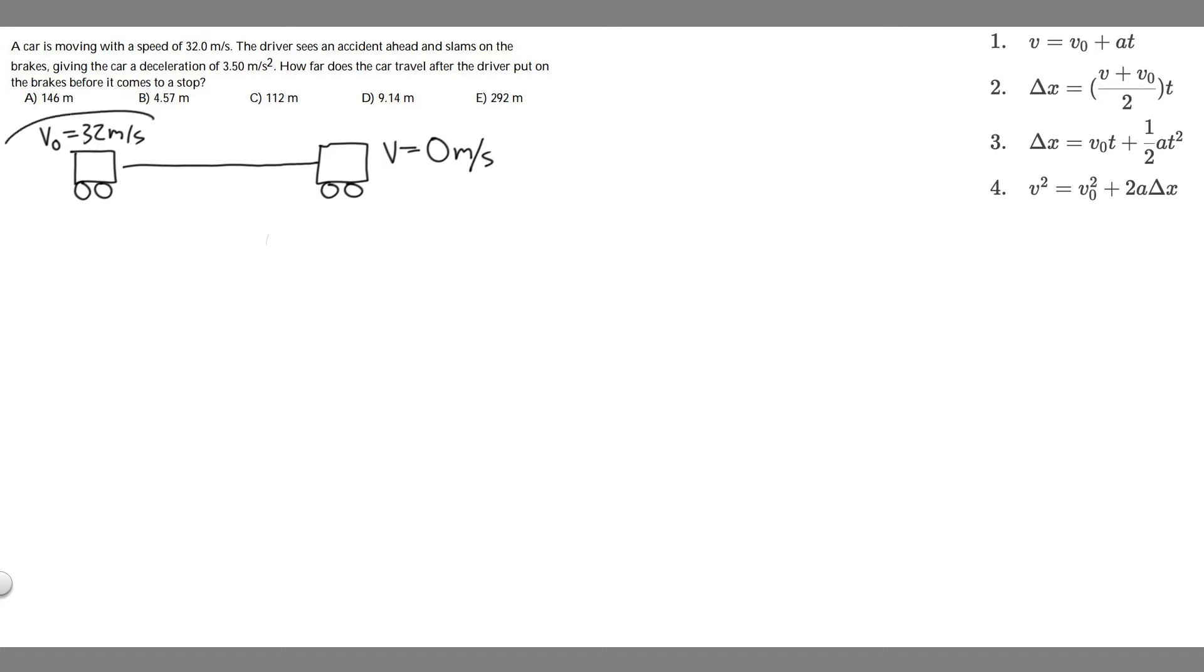We have this car traveling 32 meters per second, so its initial velocity is 32 meters per second. And then at this point, it's going to start decelerating. So its acceleration, A, is going to be equal to minus 3.5 meters per second squared.